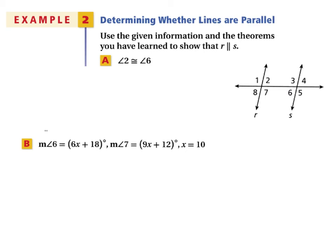In example 2, we determine that lines are parallel using the given information and the theorems we've learned. In part A, angle 2 and angle 6 are congruent. Therefore, R is parallel to S because of the converse of the alternate interior angles theorem.